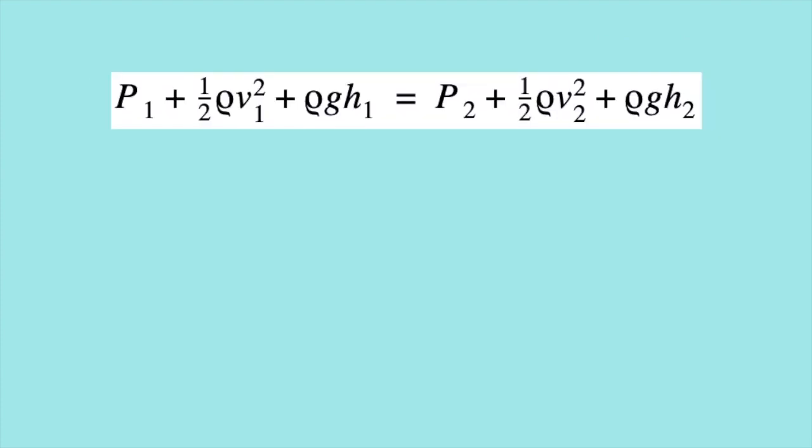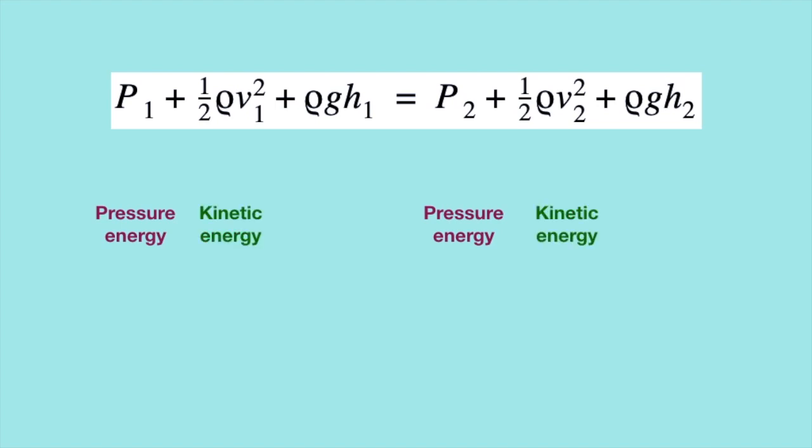In more numerical terms, Bernoulli came up with an equation. Please don't be scared — a lot of the terms won't come into play in our simple example. Looking at the equation generally, both sides look roughly the same. The first term on either side, P, tells us about the pressure energy — basically how high the pressure is. The second term tells us the kinetic energy of the fluid.